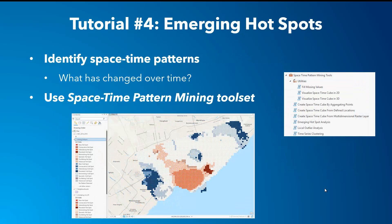Since crime occurrences in Toronto have been collected from 2014 to the present day, a crime analyst may want to see whether there are areas that have seen a decrease or increase in crime over time, and if so, where it happens and what types of trends emerge. Therefore, the fourth tutorial solves this type of problem by using the Spacetime Pattern Mining toolset, specifically the Emerging Hotspot Analysis tool.